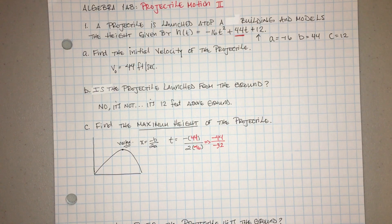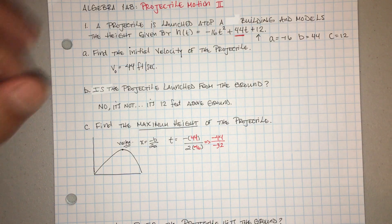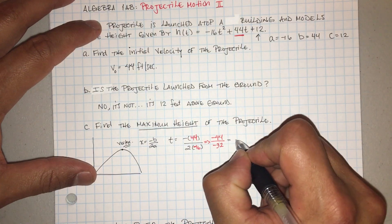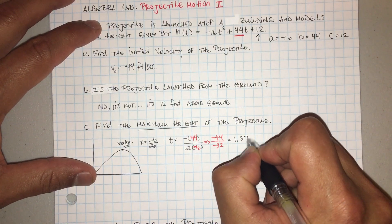And then let's go ahead and do 44 divided by 32. And that's going to give me 1.375.